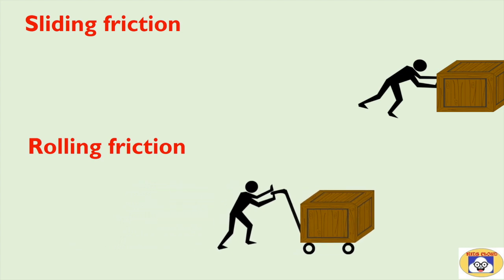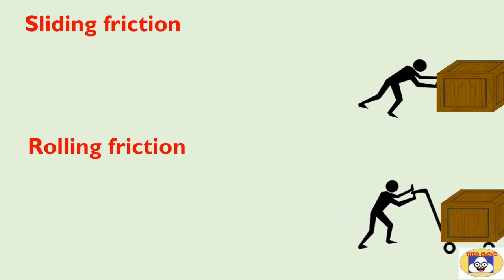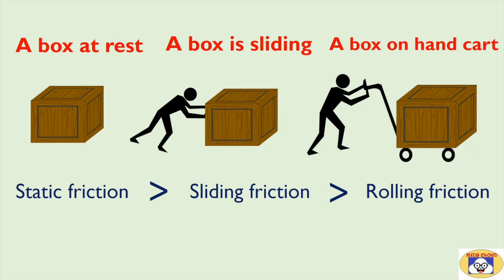When you put the box on a hand cart, friction changes from sliding to rolling. In this case, less force is required, as rolling one object over another requires a smaller area of surface contact. It is easier to overcome rolling friction than sliding friction. Thus, a box at rest has more friction than a sliding one, whereas a rolling box has still less friction than the sliding one.